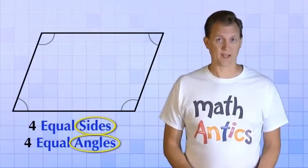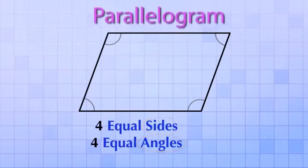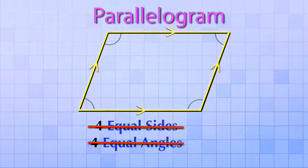Here's what we end up with, and we call it a parallelogram. It's called a parallelogram because even though its sides are not all equal and its angles are not all equal, it's still made from two pairs of parallel sides. Get it? Parallel, parallelogram.